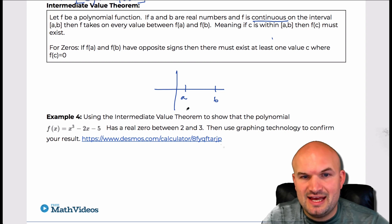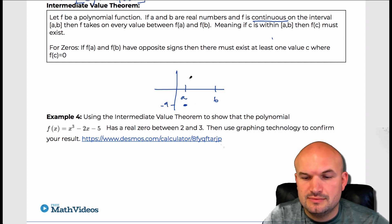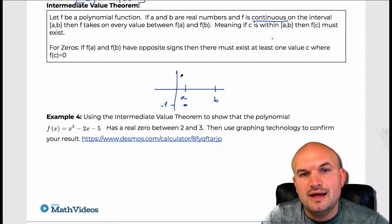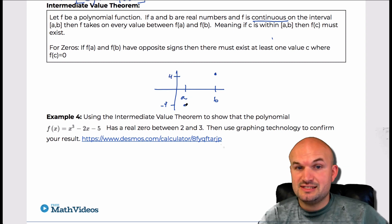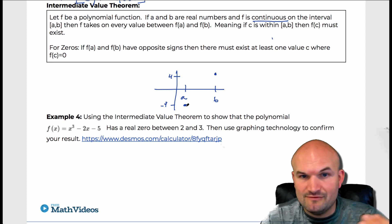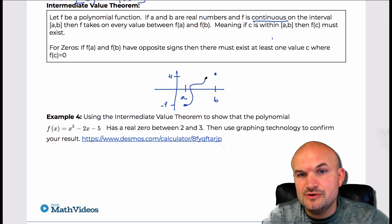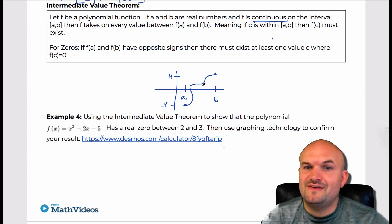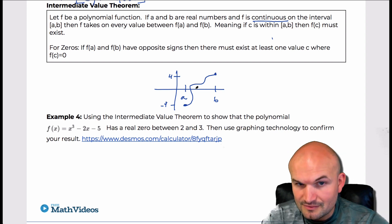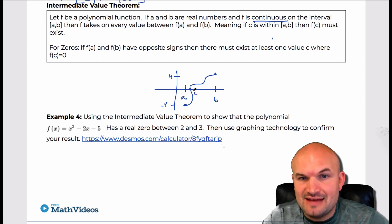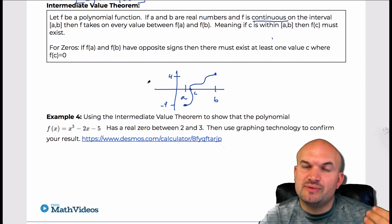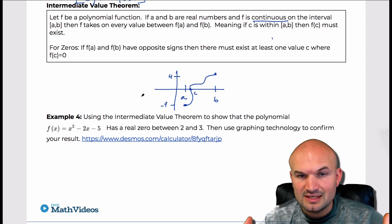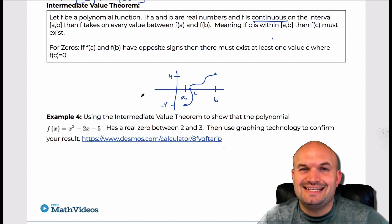What the theorem is saying is: if F of A is some negative value — let's say negative four — and F of B ends up being like positive four, then as long as this is a continuous function, we don't know how many times it's going to cross. But the only thing we do know is that to go from a negative value to a positive value of a continuous function, it has to cross at some value C. That x-intercept, which we've talked about, is a real zero. The theorem doesn't tell us where C is, but it tells us that C has to exist.